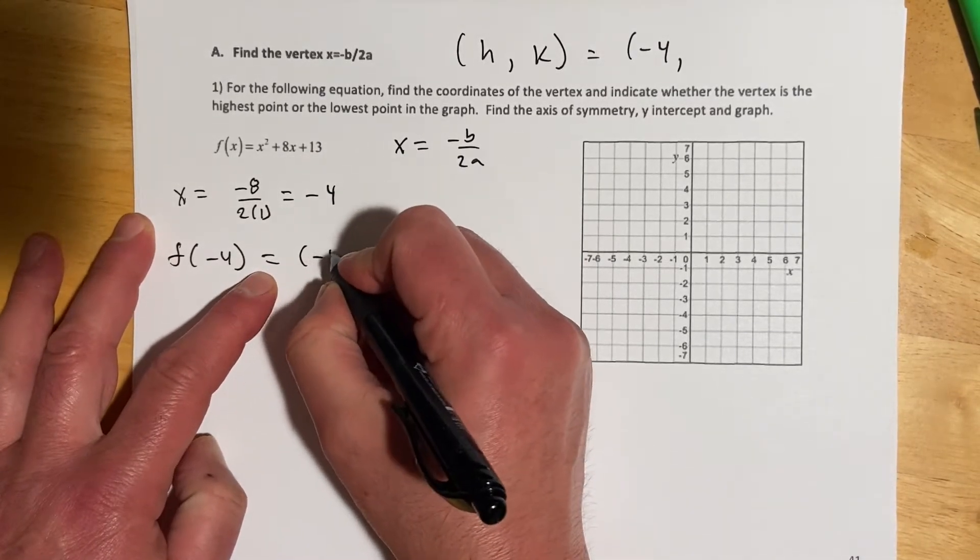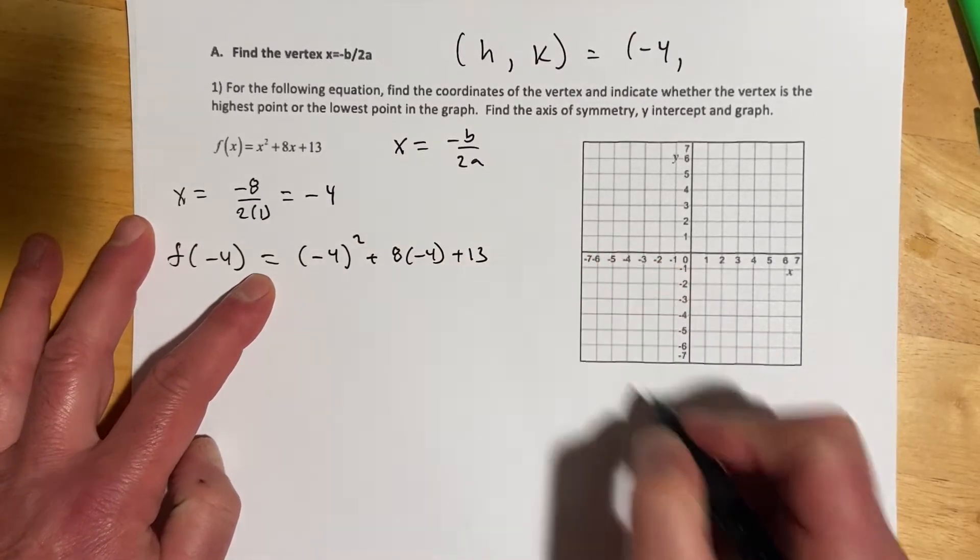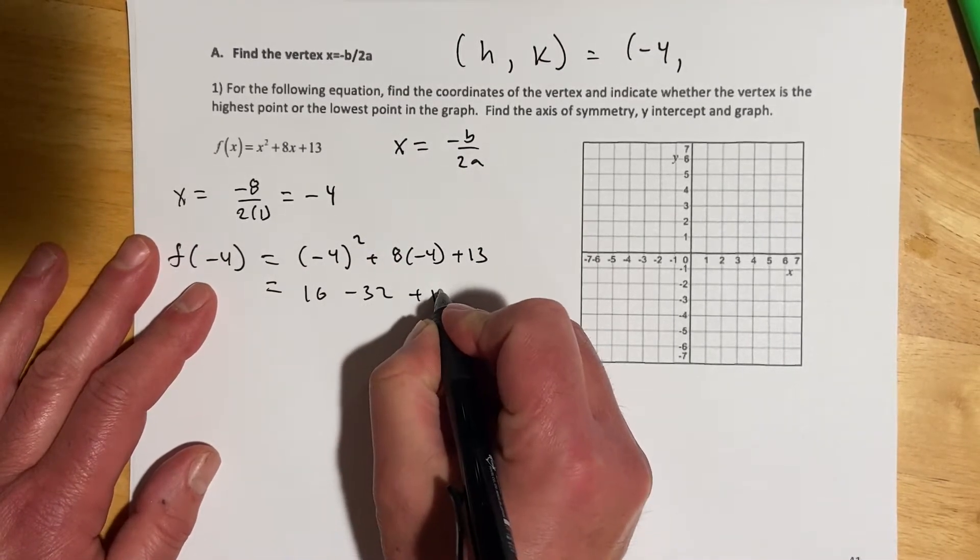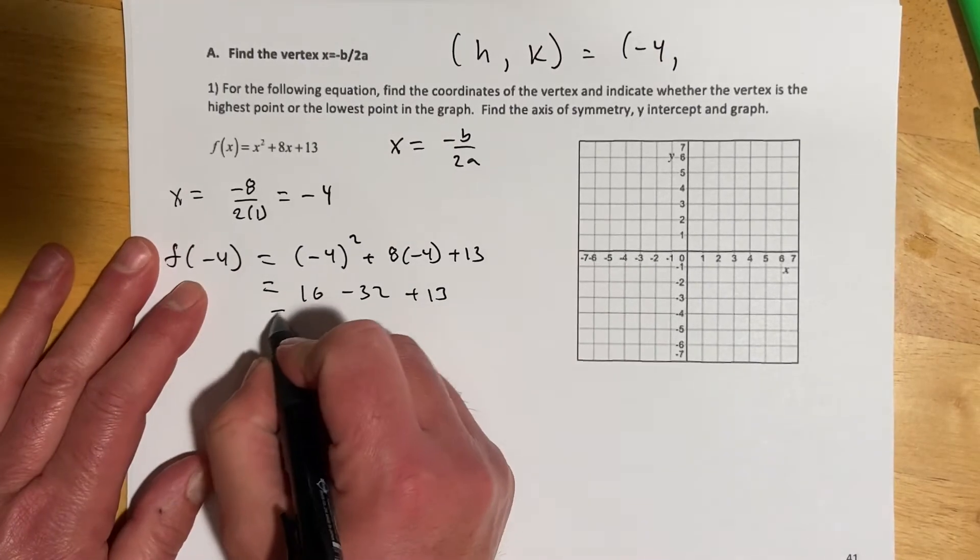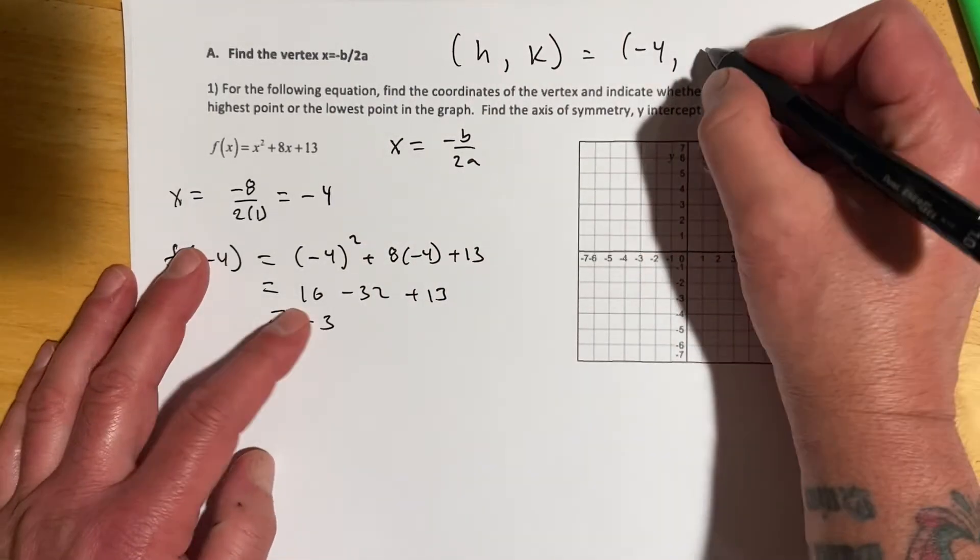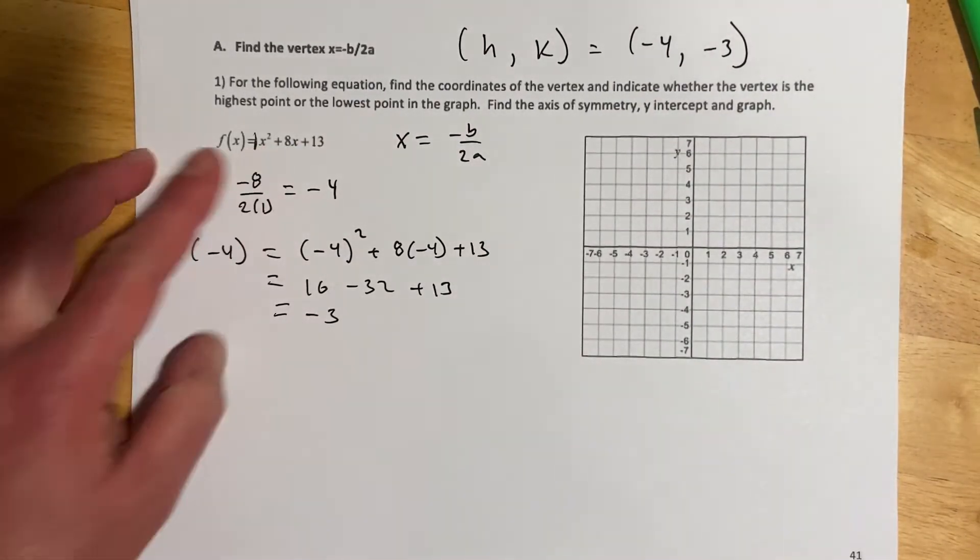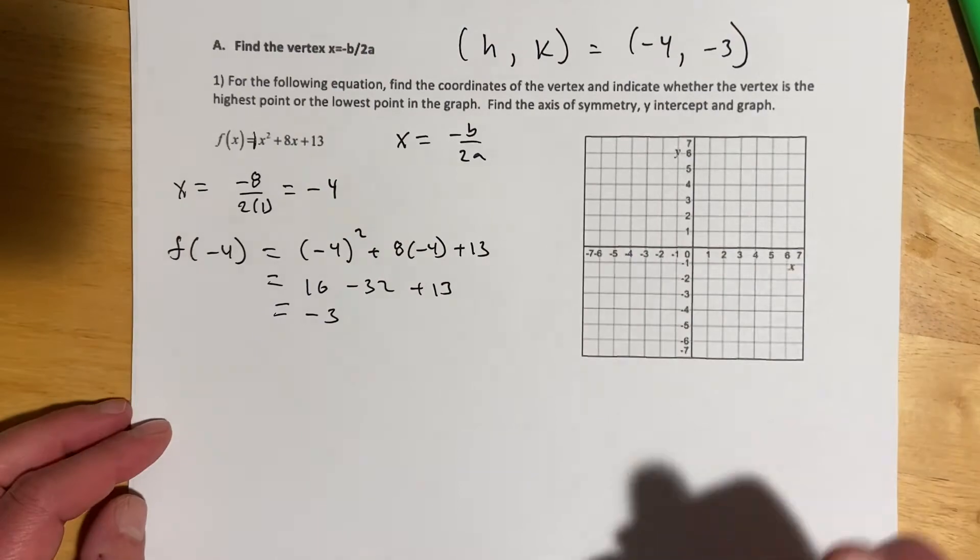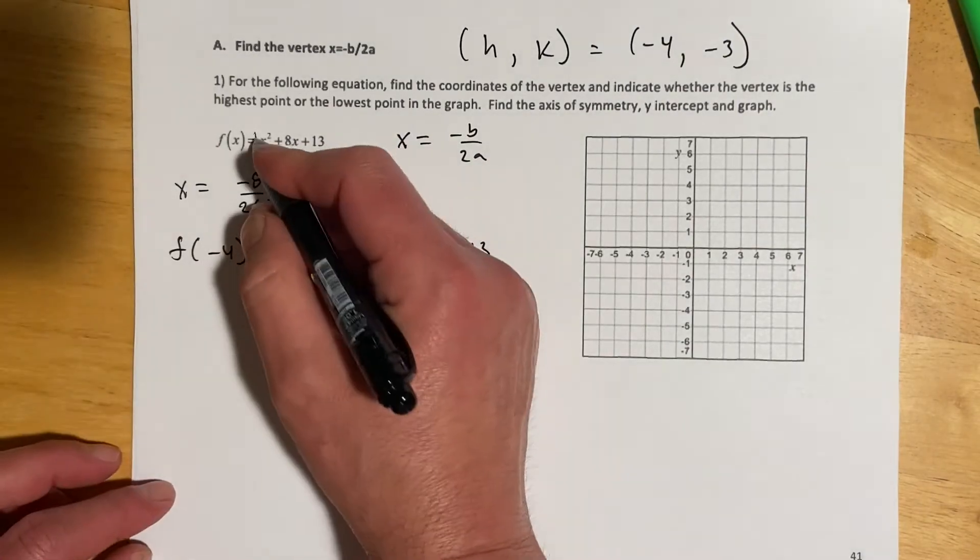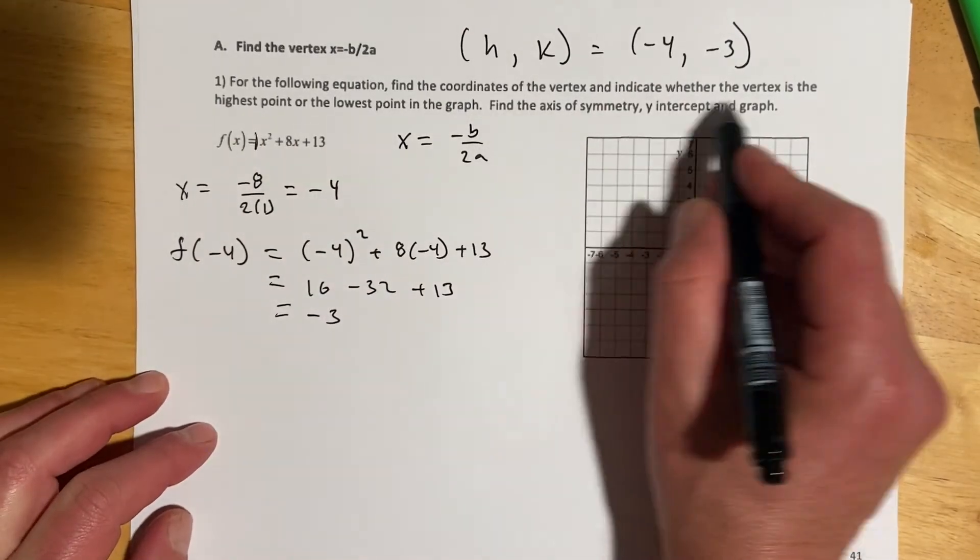So I'll just plug this back in. And that will be negative 4 quantity squared plus 8 times negative 4 plus 13. So cleaning that up, 16 minus 32 plus 13, 29 minus 32, I think that is negative 3. And so that would be my k or my y-coordinate of the vertex. And here I can see there's the a is 1, and so that's going to hold true. We know the shape.